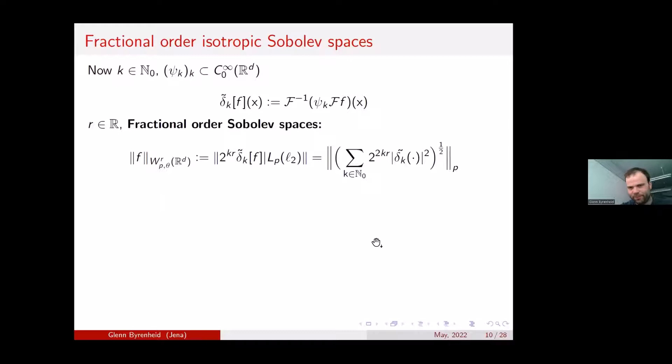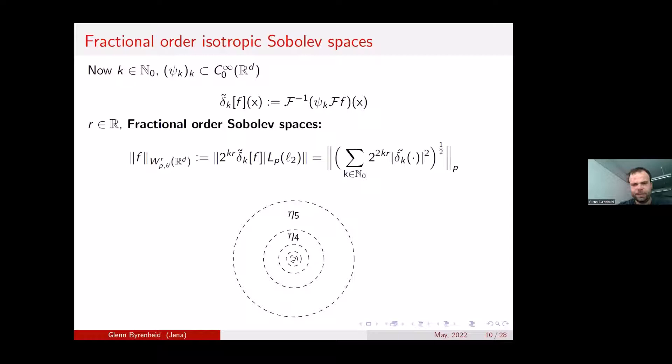Looking at the picture, for the isotropic case we decompose the Fourier plane into dyadic annuli — weighted differently from the hyperbolic rectangular decomposition used for mixed spaces. Keep in mind: there is a key difference between the resolution of unity for isotropic and for mixed spaces.